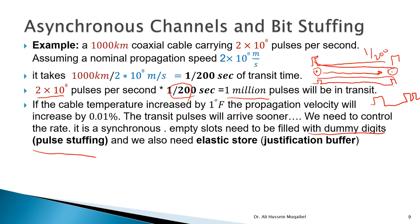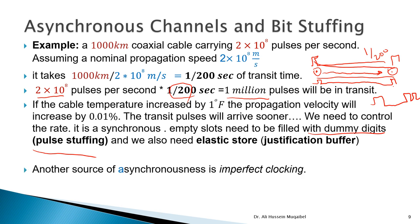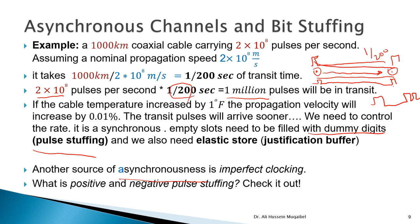Another source of asynchronousness is imperfect clocking — the timing at the receiver and transmitter will not be exactly the same, causing slight shifts. We cannot use the channel at the maximum theoretical limit. Temperature changes can increase or decrease speed, hence both positive and negative pulse stuffing exist. You are advised to look up positive versus negative pulse stuffing in available resources.